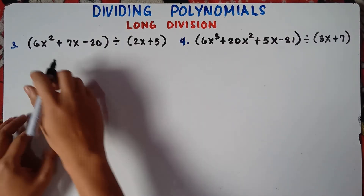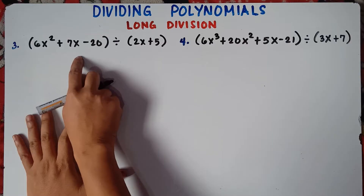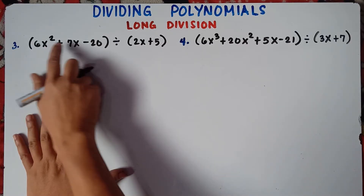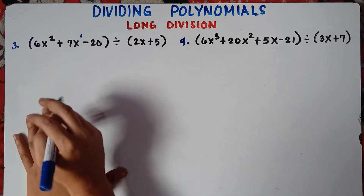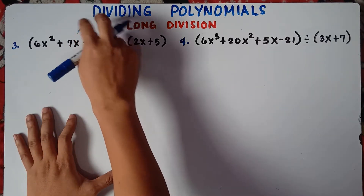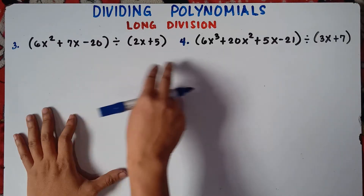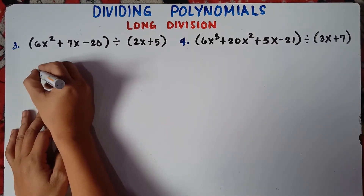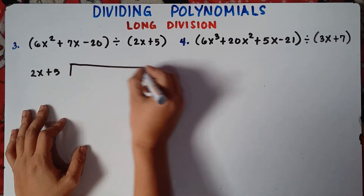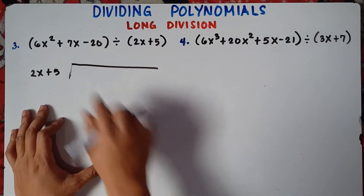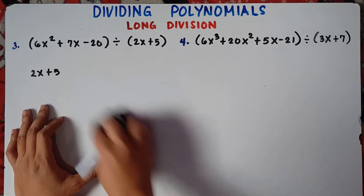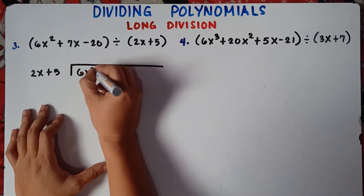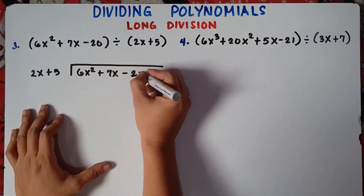Alright, so write this one. Check first, class, if the polynomials' degree is arranged. So we have x squared, then x raised to the power of 1 — understood that there's 1 here — and then the constant. So it's already been arranged, so we can divide. So this will be 2x plus 5, dividing 6x squared plus 7x minus 20.